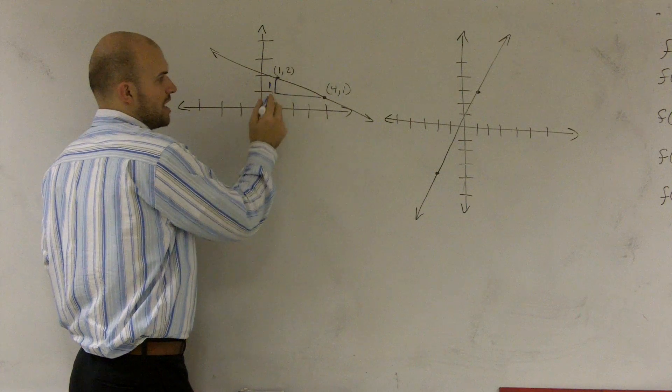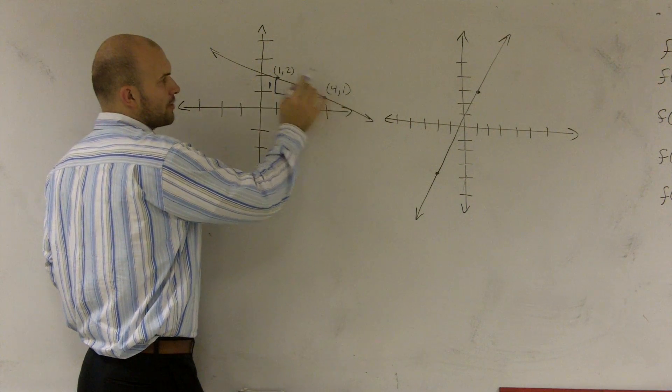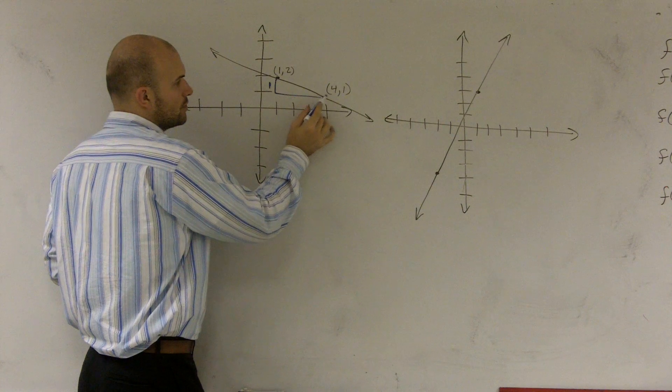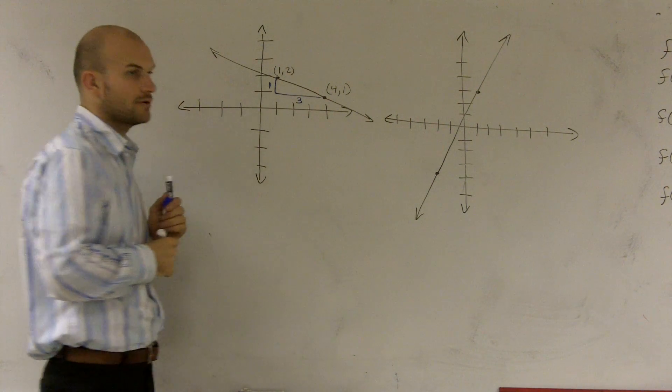Just think of what is the quantity that we're going from one point to the other. Then I look at what is my horizontal change? How far am I going from this point over to this point? Well, I'm going from a one to a four, how many units? One, two, three units.